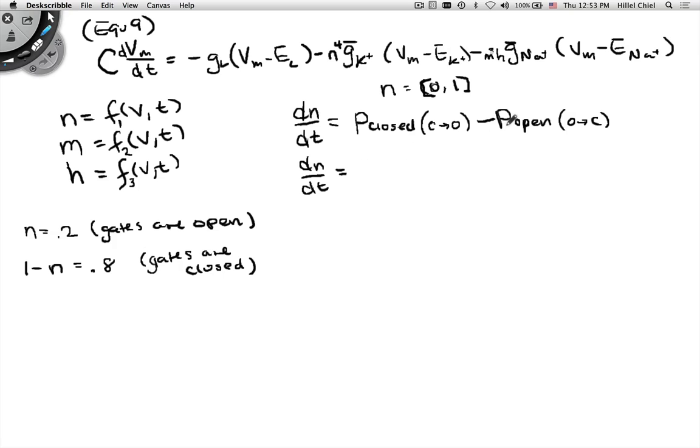Then what does that mean about the number of gates? One minus n, which is one minus 0.2, is 0.8. And that means that's the 80% of the gates are closed, or the probability of finding closed gates is 0.8. So the population that are closed, we're going to say, is one minus n. And the population that are open is going to be n. And so now you have to add in the rate of change for closed gates to become open and for open gates to become closed. And we're going to call those alpha n and beta n. And that explains how we get to equation 10.